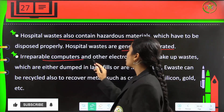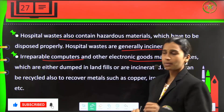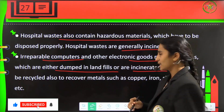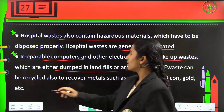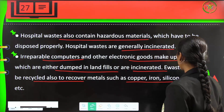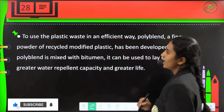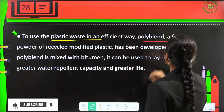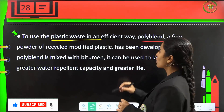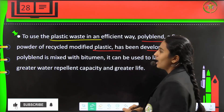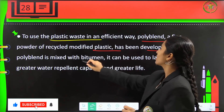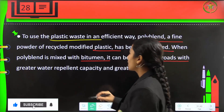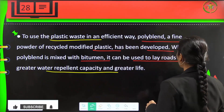Computers and other electronic goods make up e-waste, which is either dumped in landfills or incinerated. E-waste can be recycled to recover metals like copper, iron, silicon, gold, etc. To use plastic waste efficiently, polyblend — a fine powder of recycled modified plastic — has been developed. When polyblend is mixed with bitumen, it can be used to lay roads which have greater water-repellent capacity and greater life.